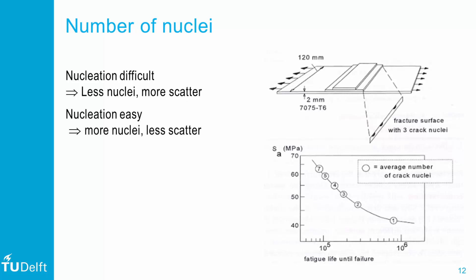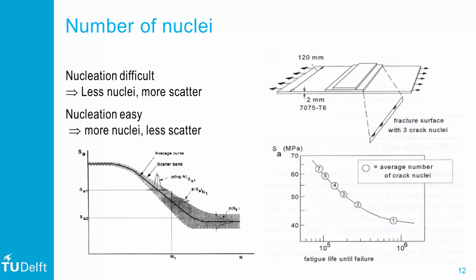In general, a high number of crack nuclei indicates high local stress amplitudes, which may relate to high loading amplitudes, high stress concentrations, or rough and damaged surfaces. Looking at SN curves, one may generally expect a higher number of crack nuclei at high amplitude stresses, while near the fatigue limit only a single crack may have nucleated and propagated to failure. This also explains the amount of scatter in experimental results: a high number of nuclei indicates easier crack initiation and hence less scatter, while near the fatigue limit the scatter is substantial.